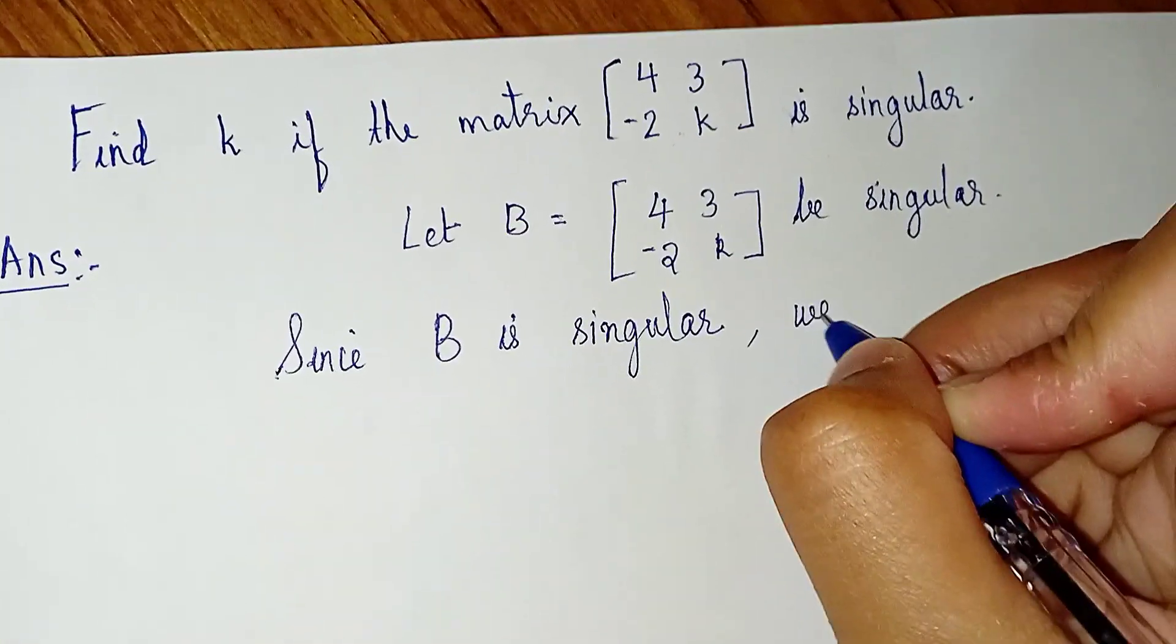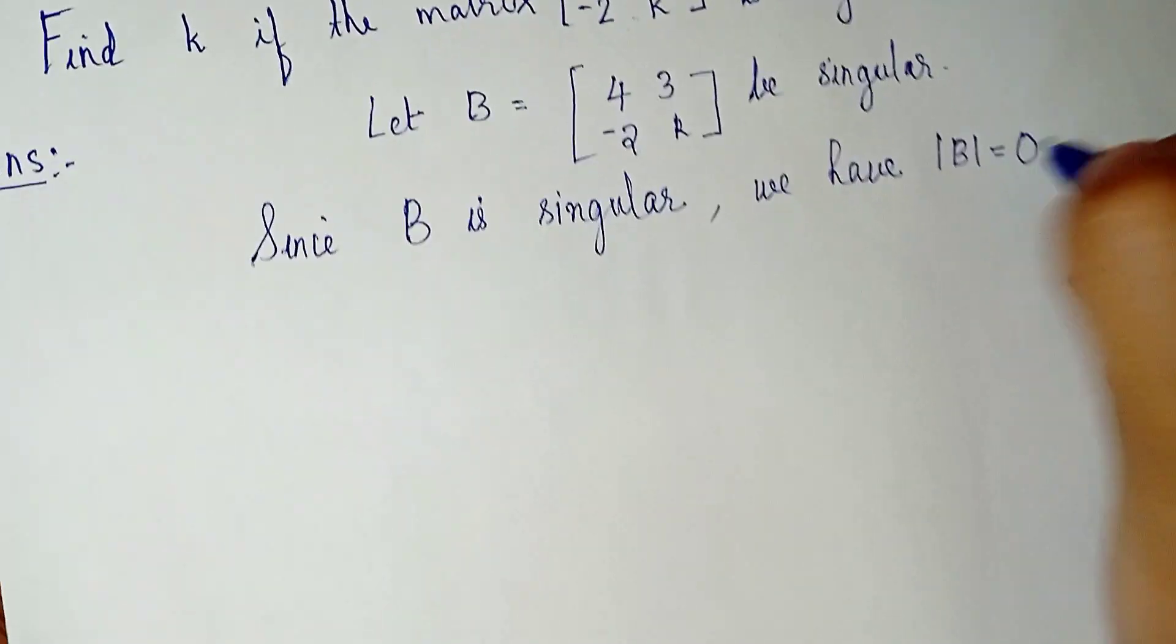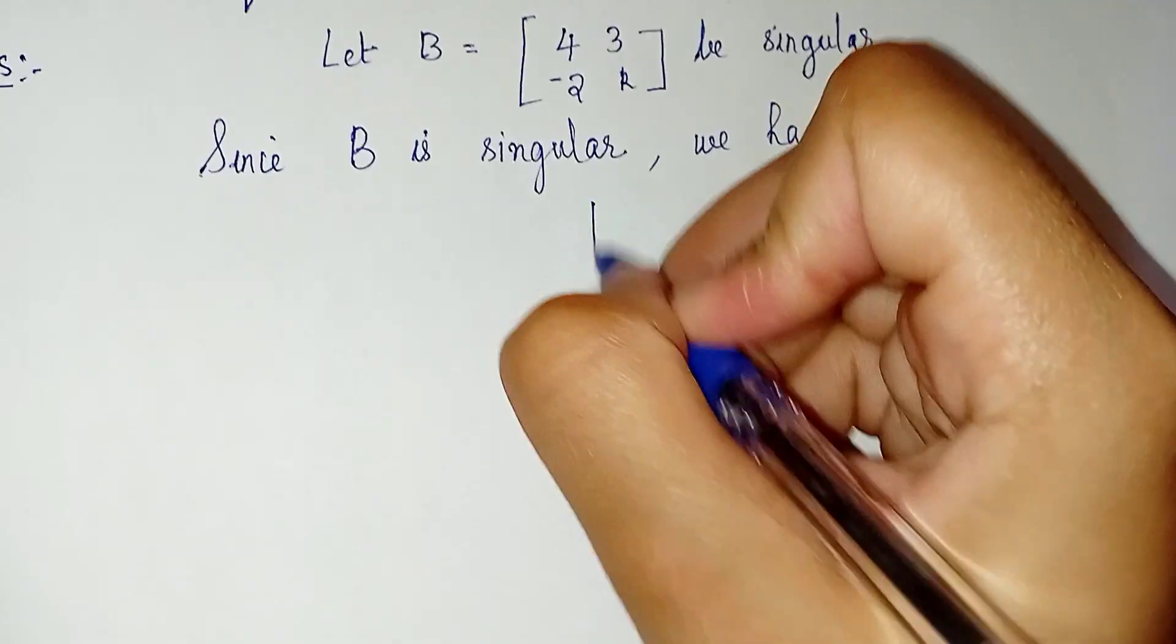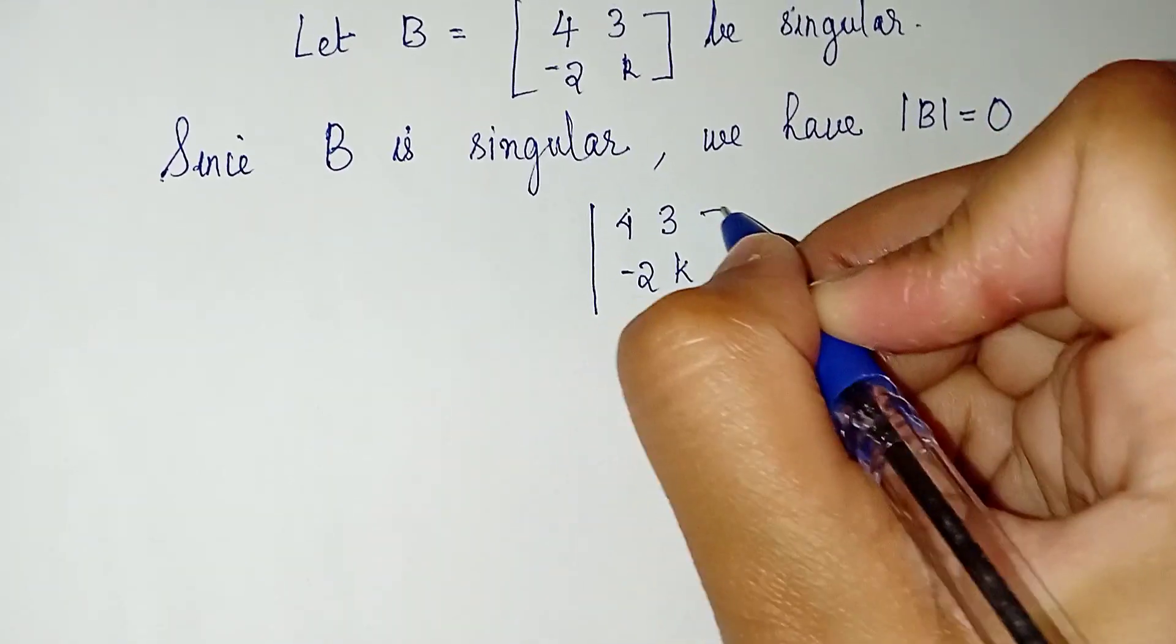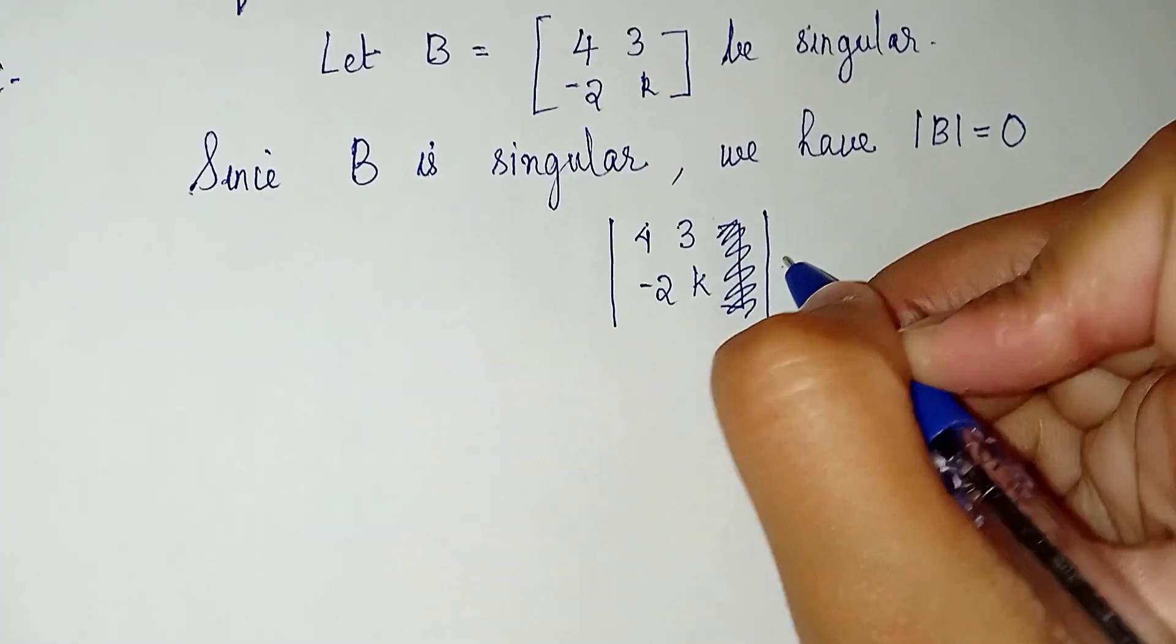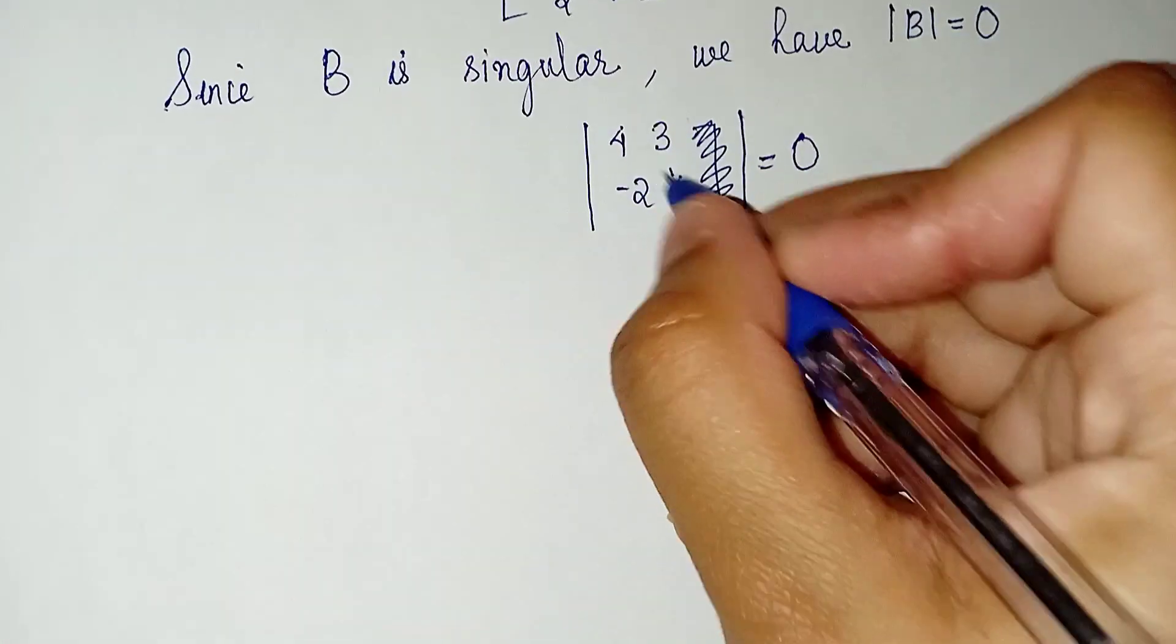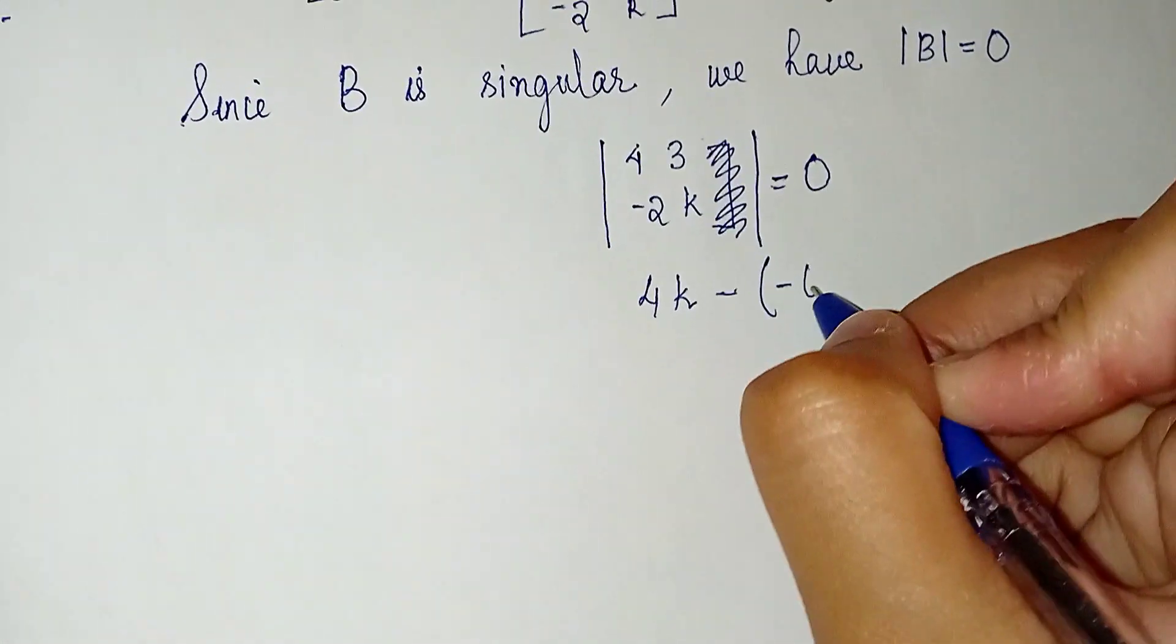So determinant of B means determinant of [4 3; -2 k] will be equal to 0. That is 4k minus (-6) is equal to 0.